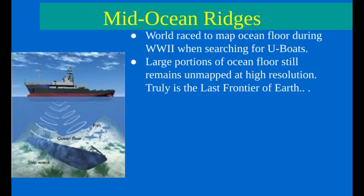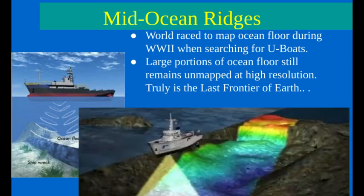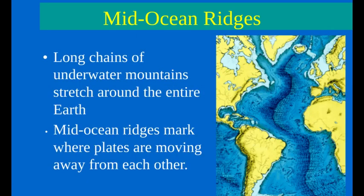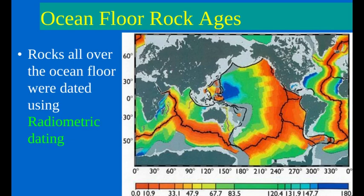Mid-ocean ridges also support the theory of plate tectonics. Even today, much of the ocean floor remains a mystery. During World War II, the world raced to map the ocean floor in search of German submarines called U-boats, but large portions of the ocean floor still remain unmapped at high resolution. Ridges form in regions where oceanic plates are moving away from each other, where new lava is erupting from below. We can track the motion of the plates and therefore the continents as they move further from one another. Oceanic plates can be age-dated from cooling lava on the ocean floor that spewed out of the ridge zone. Young rocks are found directly along the ridge system, shown in red on this map, while blue represents older rocks.